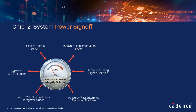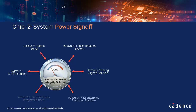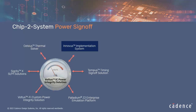The Chip 2 System Power Sign-Off video series helps you understand how Voltus integrates with a wide breadth of key Cadence products to achieve faster system-level power integrity analysis and closure. The previous video in this series talked about Voltus integration with Innovus for IR drop debugging, fixing, prevention, and optimization for faster design closure.